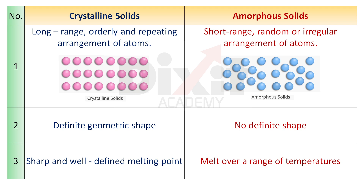Point number 3. Crystalline solids have a sharp and well-defined melting point. Amorphous solids melt over a range of temperatures.